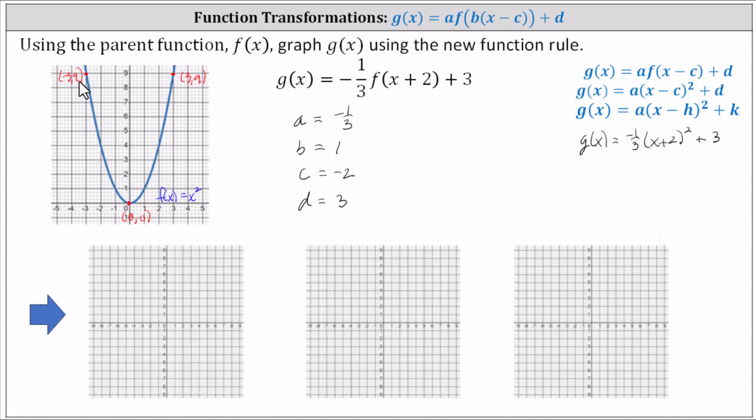And now to perform the transformation, we'll work our way from inside out, starting inside the parentheses with the x plus two, which indicates c equals negative two, and therefore the graph has shifted left two units, and therefore we'll subtract two from each of the x coordinates of our three points. Subtracting two from the x coordinate of the vertex, the new vertex is negative two comma zero.